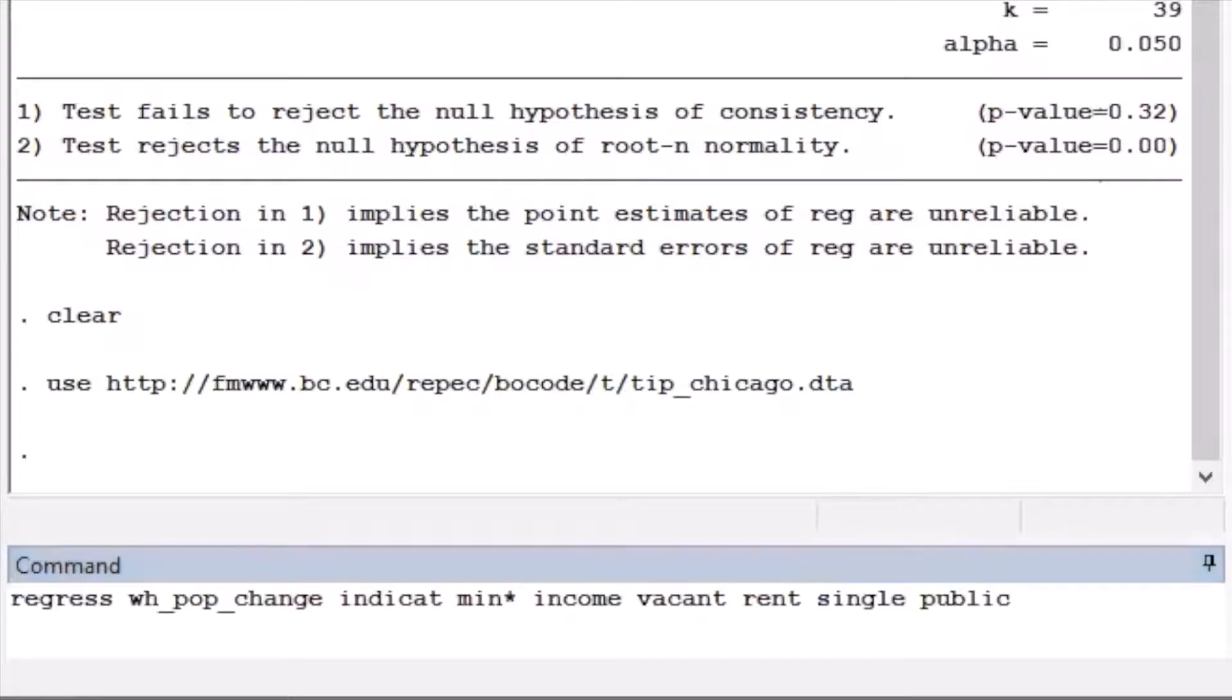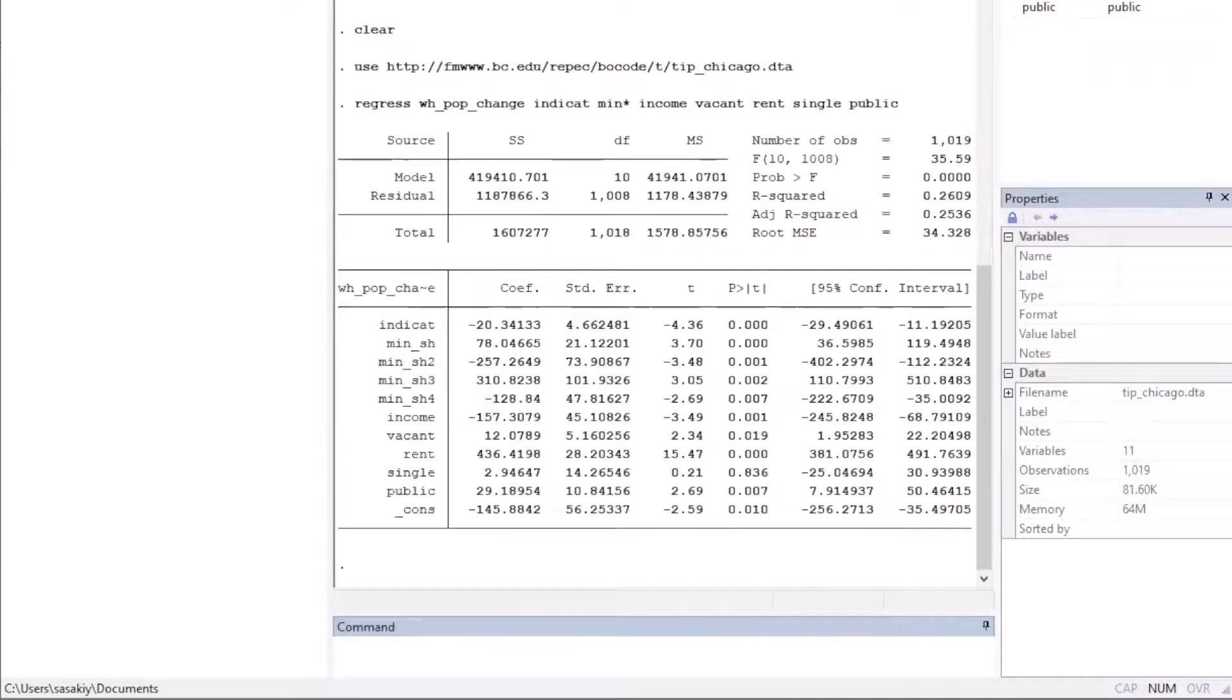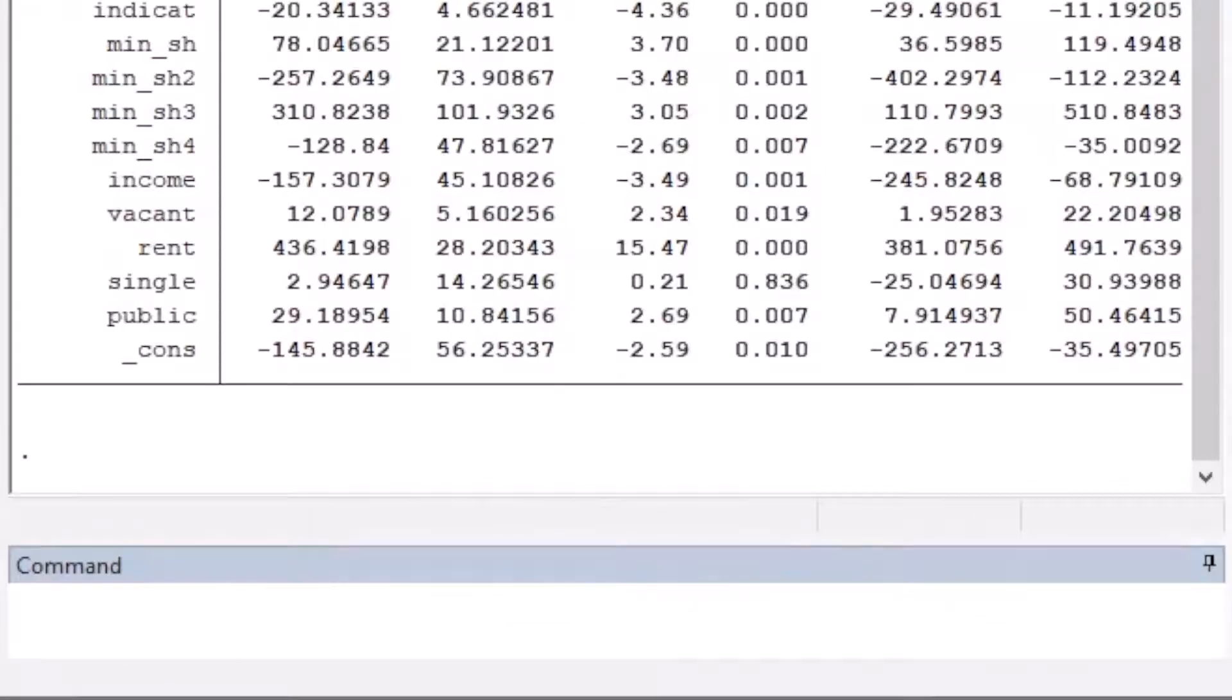Run the same regression. And again, we ask whether these point estimates and standard errors are credible. We answer this question by using the testout command.